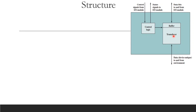The buffer temporarily holds data. The transducer converts data from electrical signals to other forms and vice versa. Looking at this figure, there are three parts: buffer, transducer, and control logic. The control logic handles communication with the IO module — it transfers control signals from the IO module. The IO module sends control signals, and if you want to write data, you can write data to and from the environment.